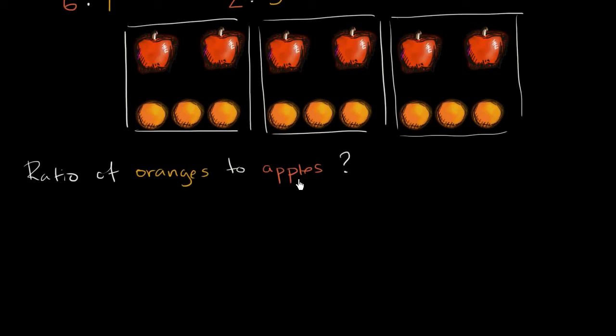Here we have nine oranges for every six apples. So we could say the ratio is going to be nine to six. The ratio is nine to six. Or an equivalent ratio, for every three oranges, so we're going to divide this by three, so for every three oranges we are going to have two apples.